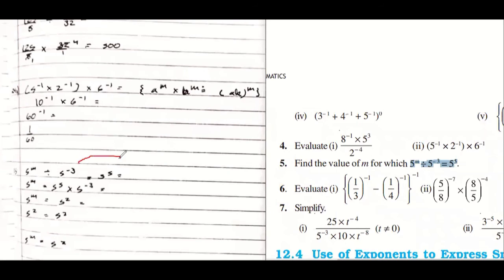So this can also be done this way. Since on the left hand side bases are same, so I can just subtract the power. So five power m minus minus three equals to five power five. In the next step, five power m plus three equals to five power five.